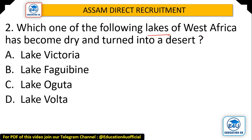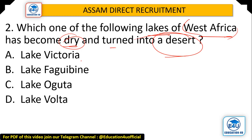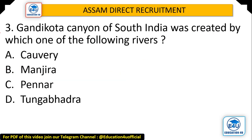Question: Which one of the following lakes of West Africa has become dry and turned into a desert? Options: Lake Victoria, Lake Fagui Bain, Lake Aguta, and Lake Falta. The answer is Number B — Lake Fagui Bain. This lake has totally dried up and turned into a desert.